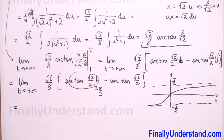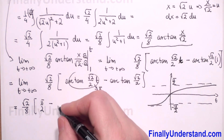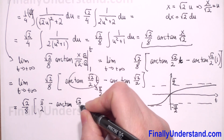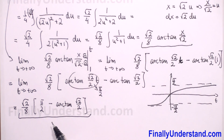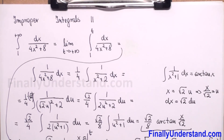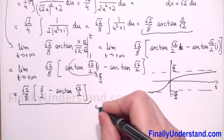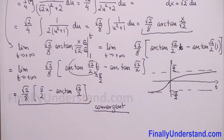So we have square root of 2 over 8 times, in brackets, pi over 2 minus arctangent of square root of 2 over 2. This is our solution. Because we obtained a finite number, it means our original integral is convergent.